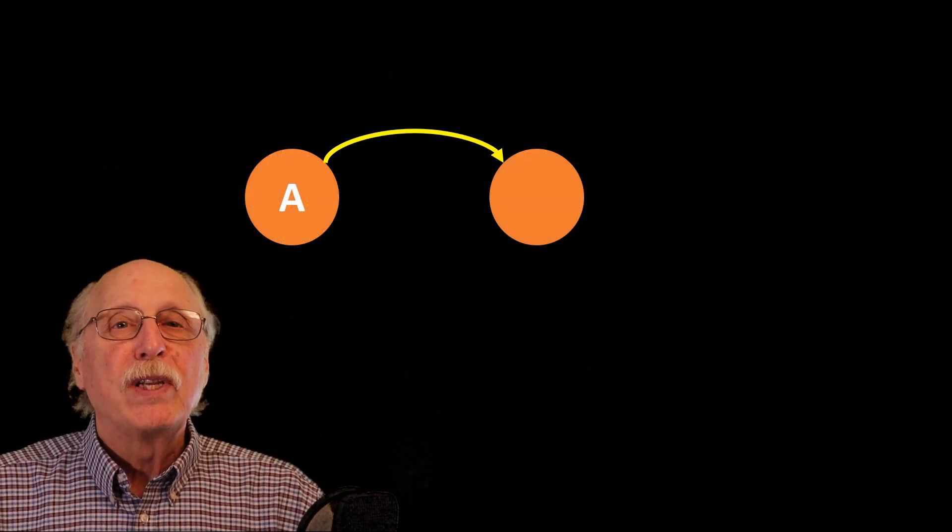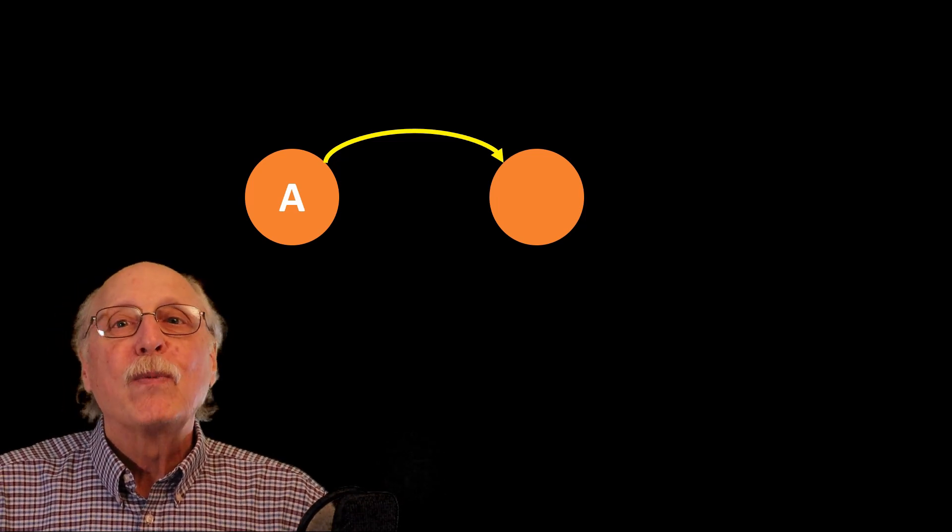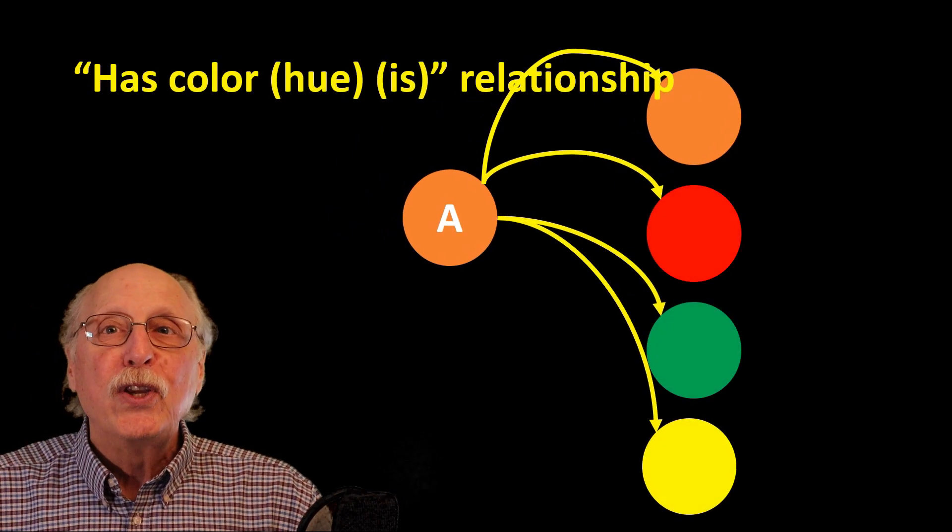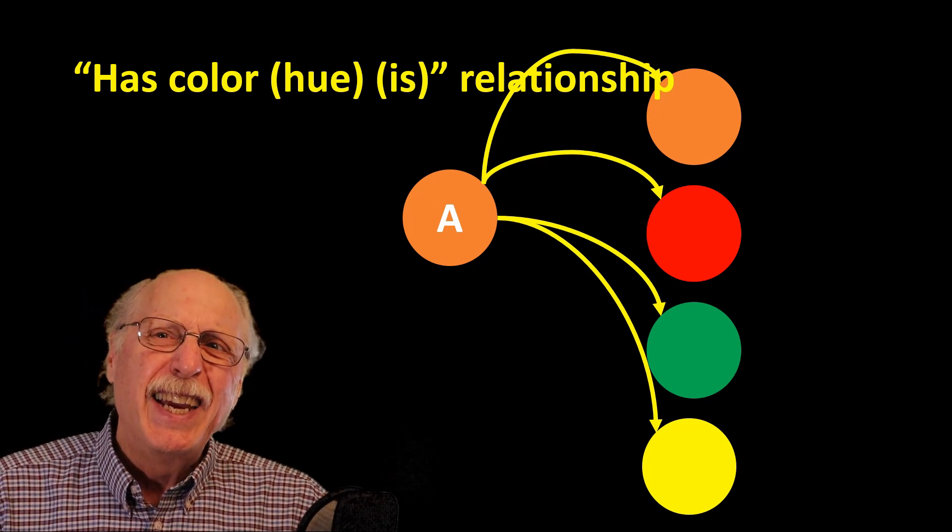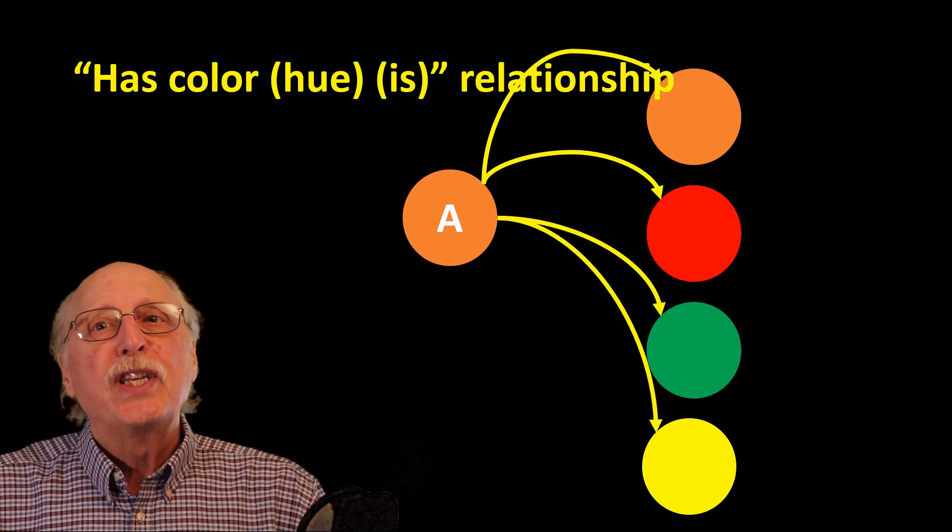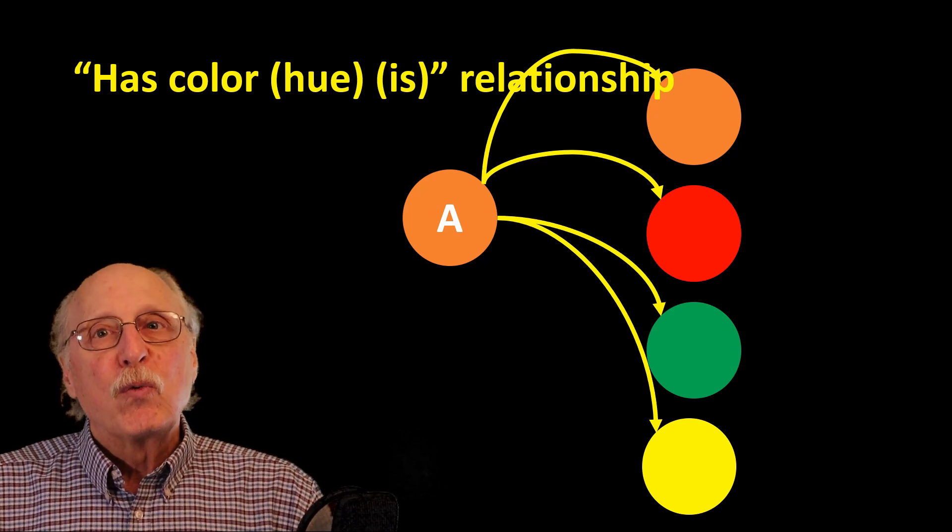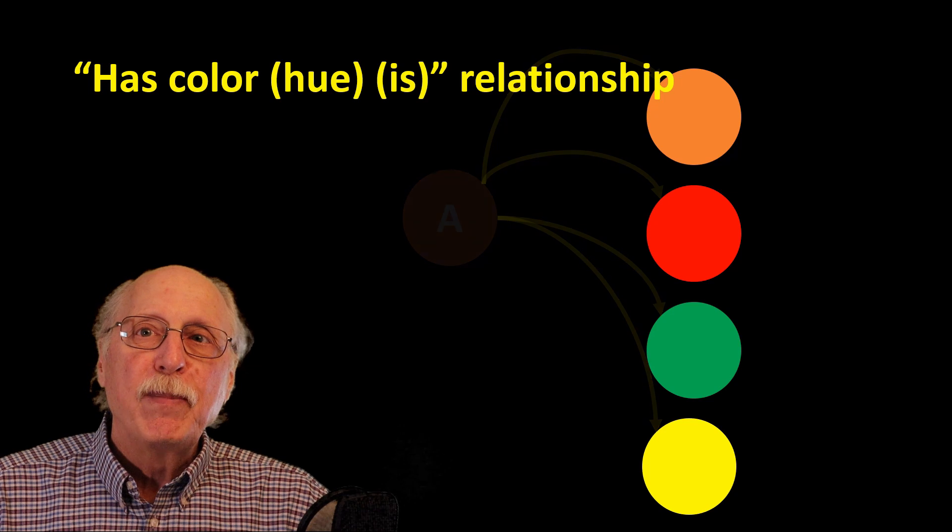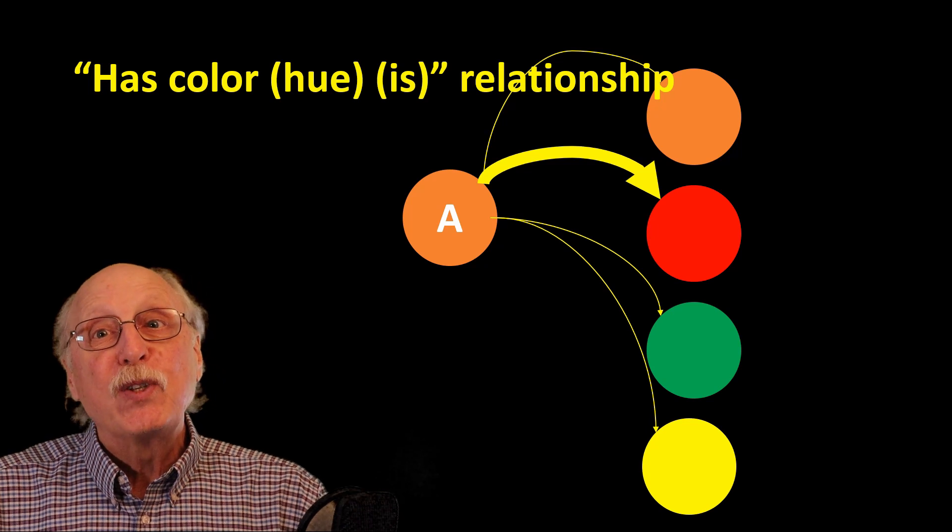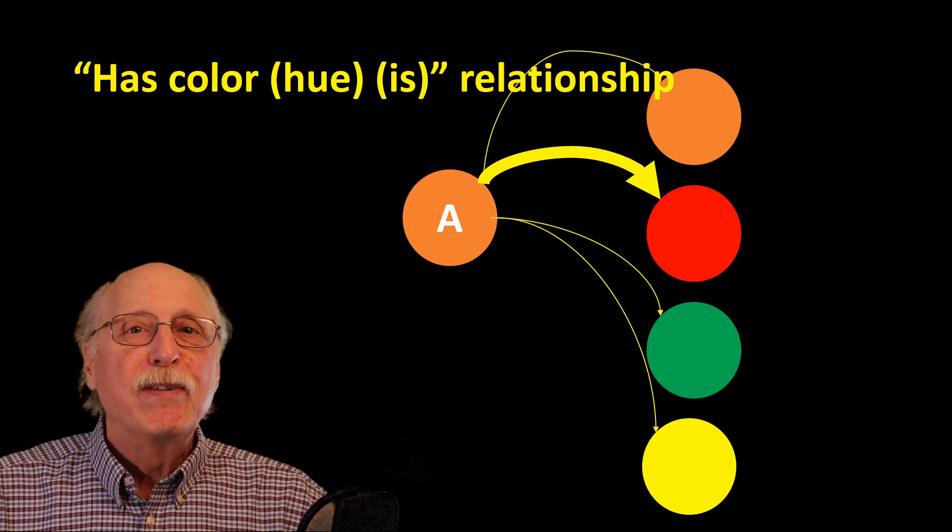So let's start with a single relationship which might be represented by two nodes and an edge. Let's start with representing the color of A. We might say that A has the color or hue of red, but in English we might simply say A is red. In order to take on a color, synapses must already exist to all possible known colors. So representing the information that A is red is simply a matter of strengthening the synapses between A and red and weakening the synapses between A and other colors. I discussed how this happens with Hebbian synapses in the previous video.